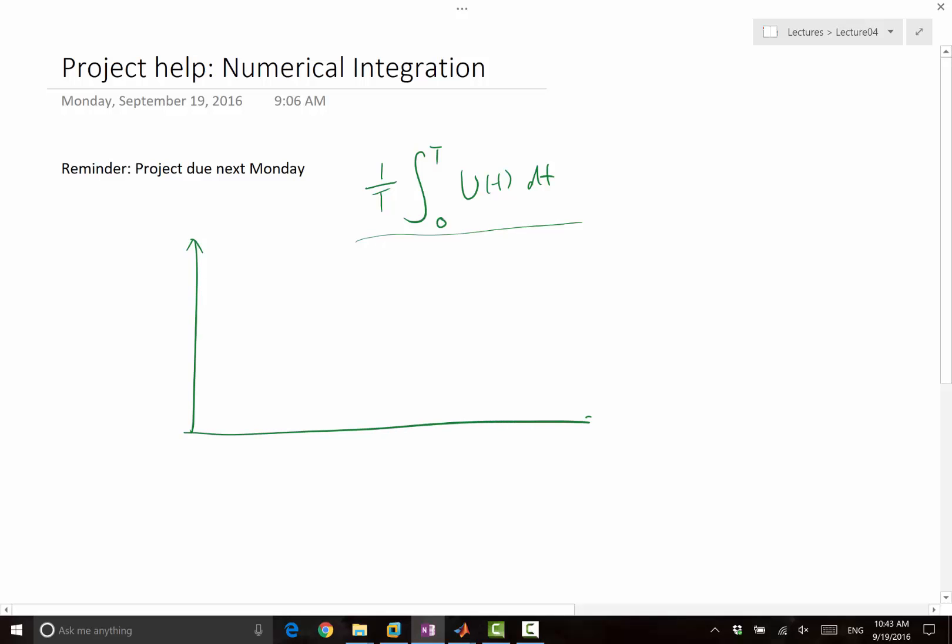I would only teach one way of doing numerical integration for now, that is the trapezoidal rule. So if this is ut, and this is T equal to 0, this is T equal to big T. If you use something like finite difference, you can discretize the function at grid points.